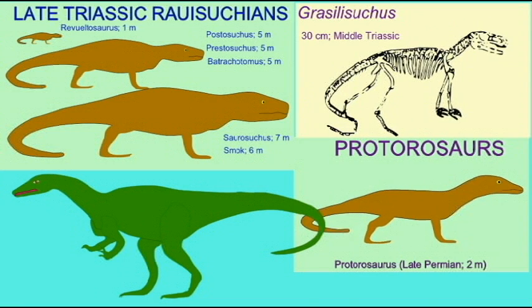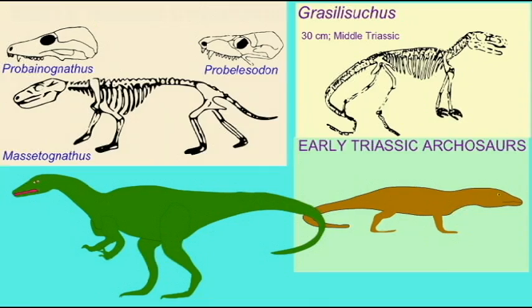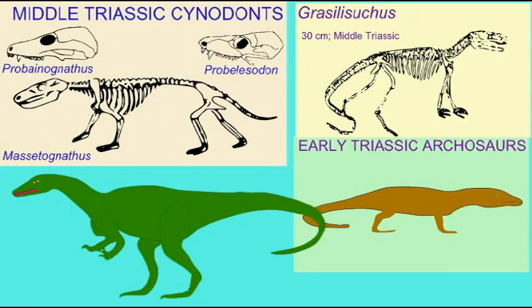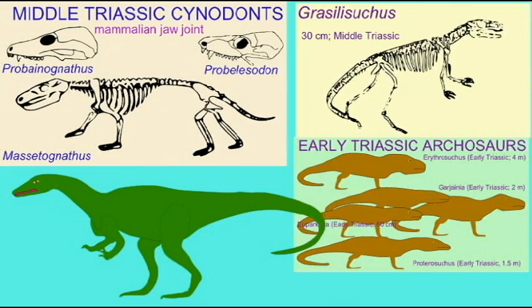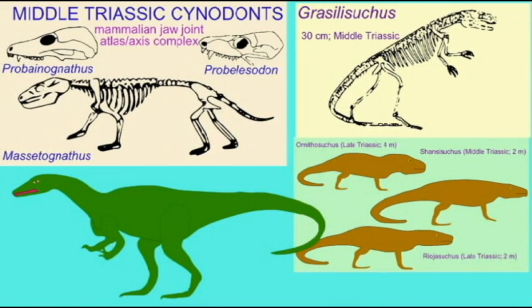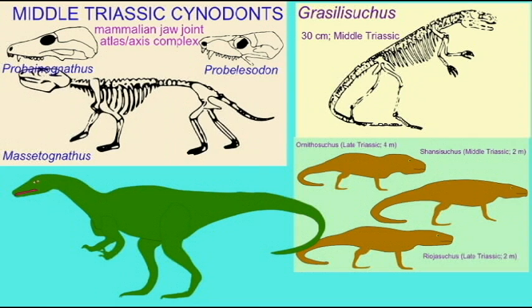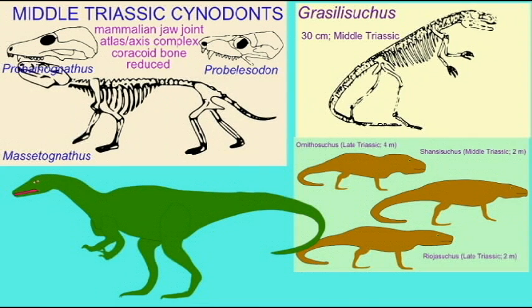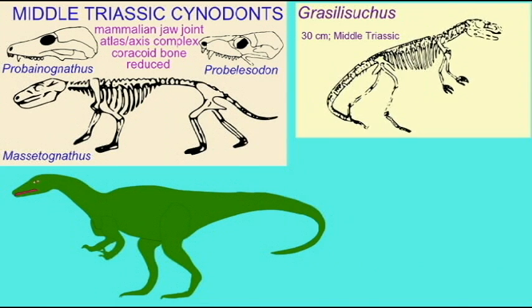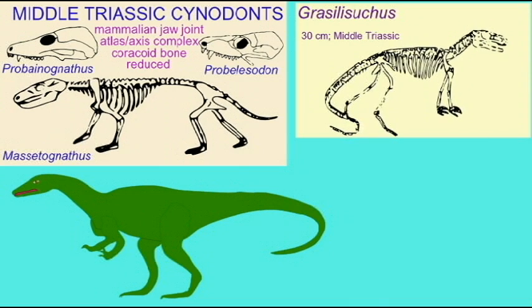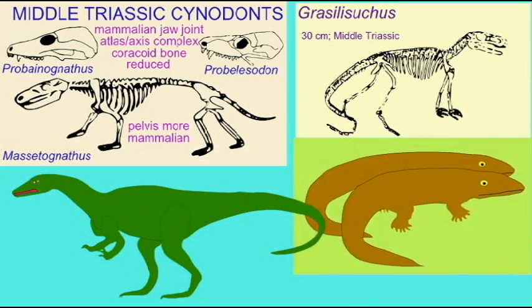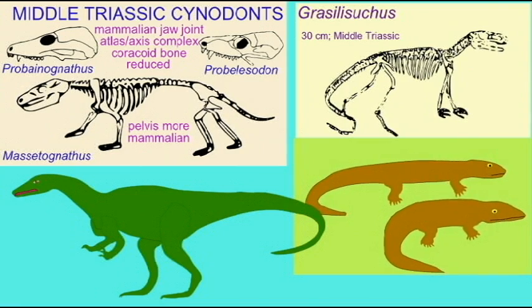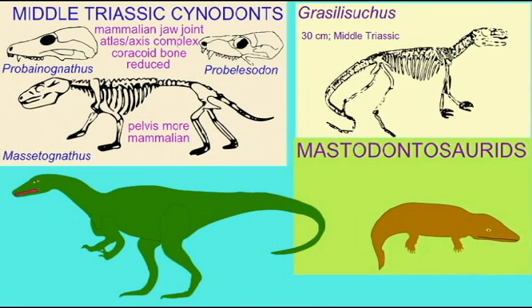The Synapsid reptiles, such as the last of the Therapsids, which were the dominant reptiles at the beginning of the Triassic, wiped out, as were the Cynodonts. So many groups of plants, such as the tree ferns, the seed ferns, the Ginkgos, the Cycadophytes, and many primitive conifers, were either wiped out or virtually wiped out.